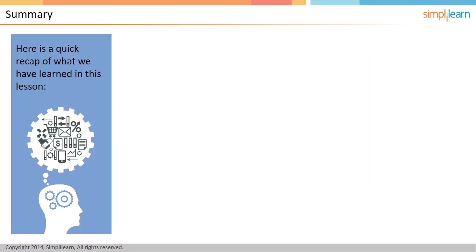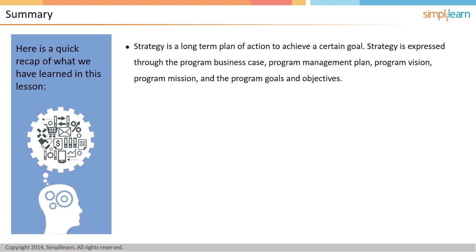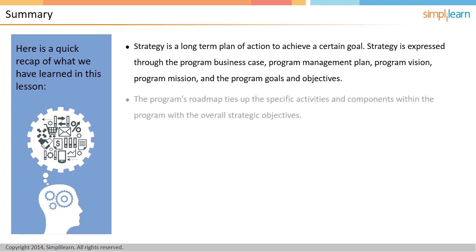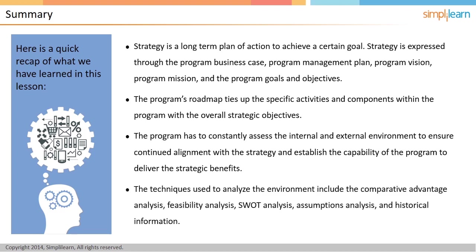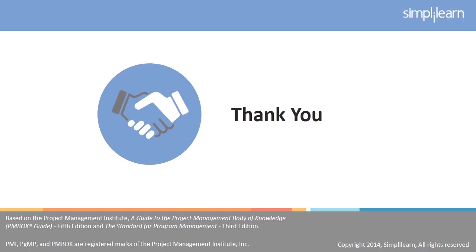Let us quickly summarize what we learned in this lesson. Strategy is a long-term plan of action to achieve a certain goal. Strategy is expressed through the program business case, program management plan, program vision, program mission, and the program goals and objectives. The program's roadmap ties up the specific activities and components within the program with the overall strategic objectives. The program has to constantly assess the internal and external environment to ensure continued alignment with the strategy and establish the capability of the program to deliver the strategic benefits. The techniques used to analyze the environment include comparative advantage analysis, feasibility analysis, SWOT analysis, assumptions analysis, and historical information. With this, we conclude the discussion on the first of the five domains, Program Strategic Alignment. In the next lesson, we will discuss benefits management.